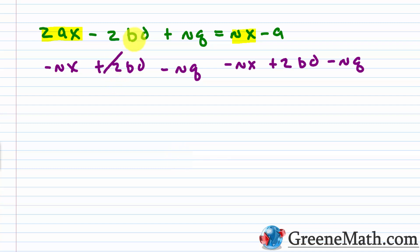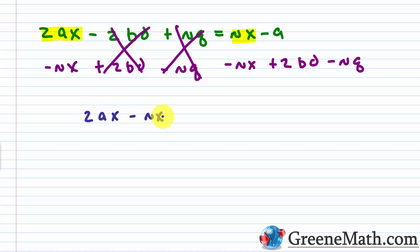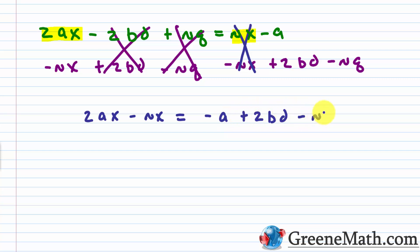I subtract NX from each side, add ZBD to each side, and subtract NQ from each side. After canceling, on the left I have ZAX minus NX, and on the right I have negative A plus ZBD minus NQ.